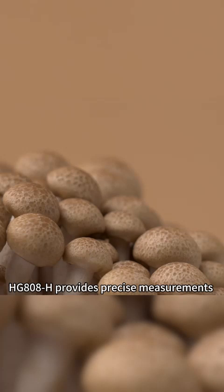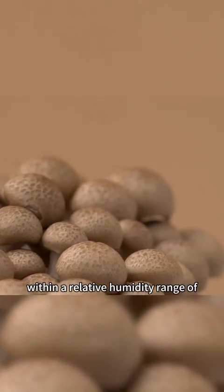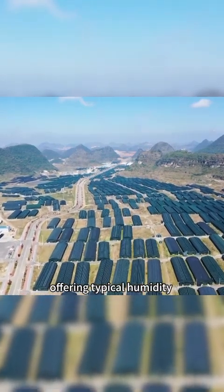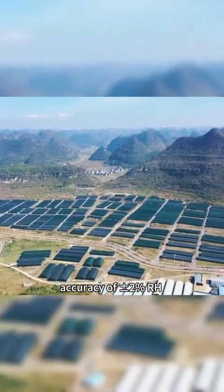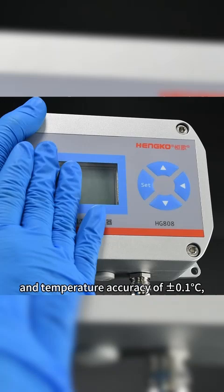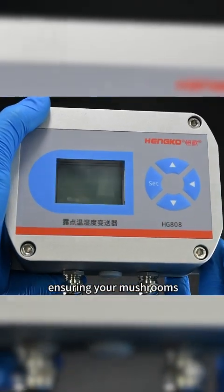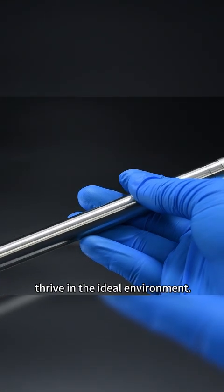HG808H provides precise measurements within a relative humidity range of 80% RH to 95%, offering typical humidity accuracy of plus or minus 2% RH and temperature accuracy of plus or minus 0.1 degrees Celsius, ensuring your mushrooms thrive in the ideal environment.